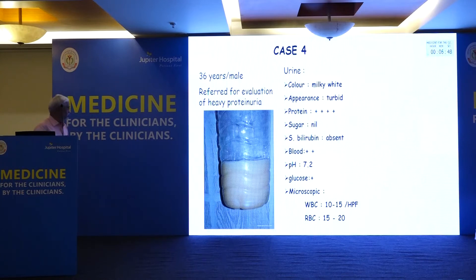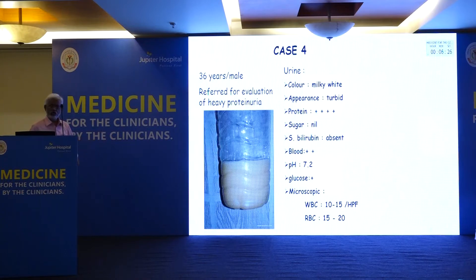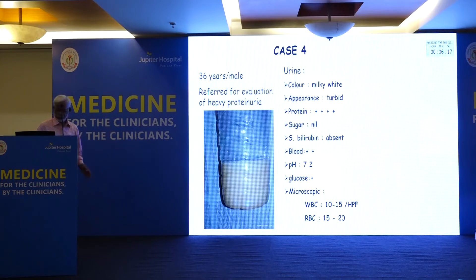A 36-year-old man was referred for heavy proteinuria but had milky urine. Protein was 4+, sugar nil, bilirubin absent, and blood 2+. Considering this milky urine, we tested for chylomicrons, which were positive. After cystoscopy and silver nitrate installation, the chyluria disappeared and the urinary abnormalities also resolved.